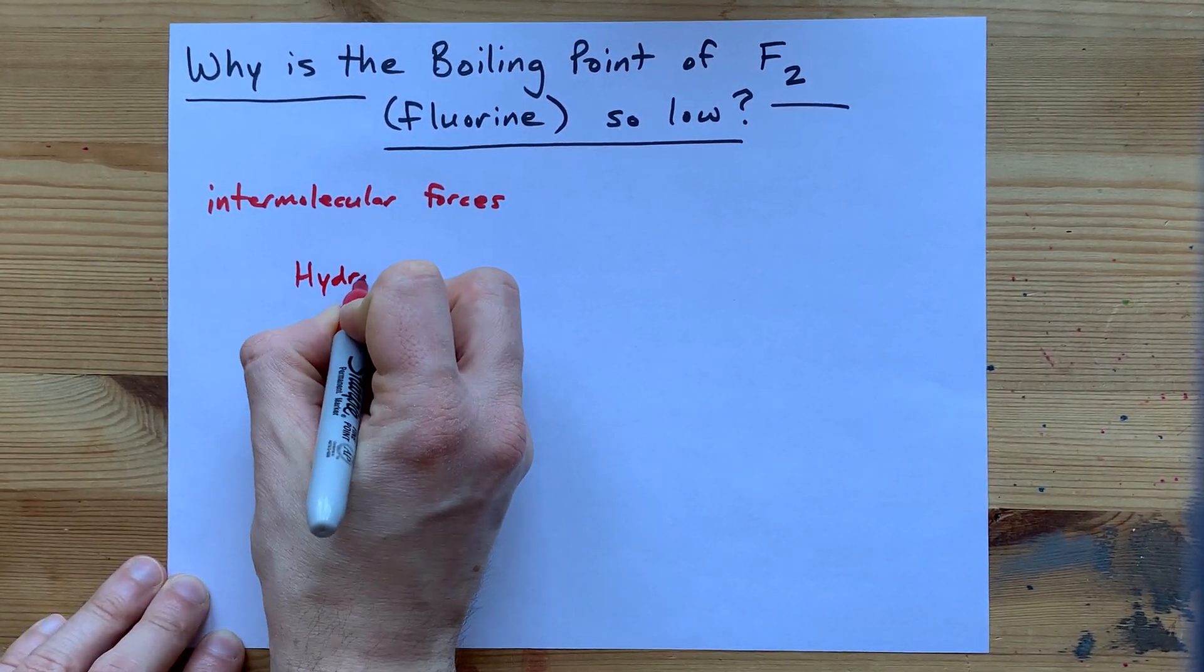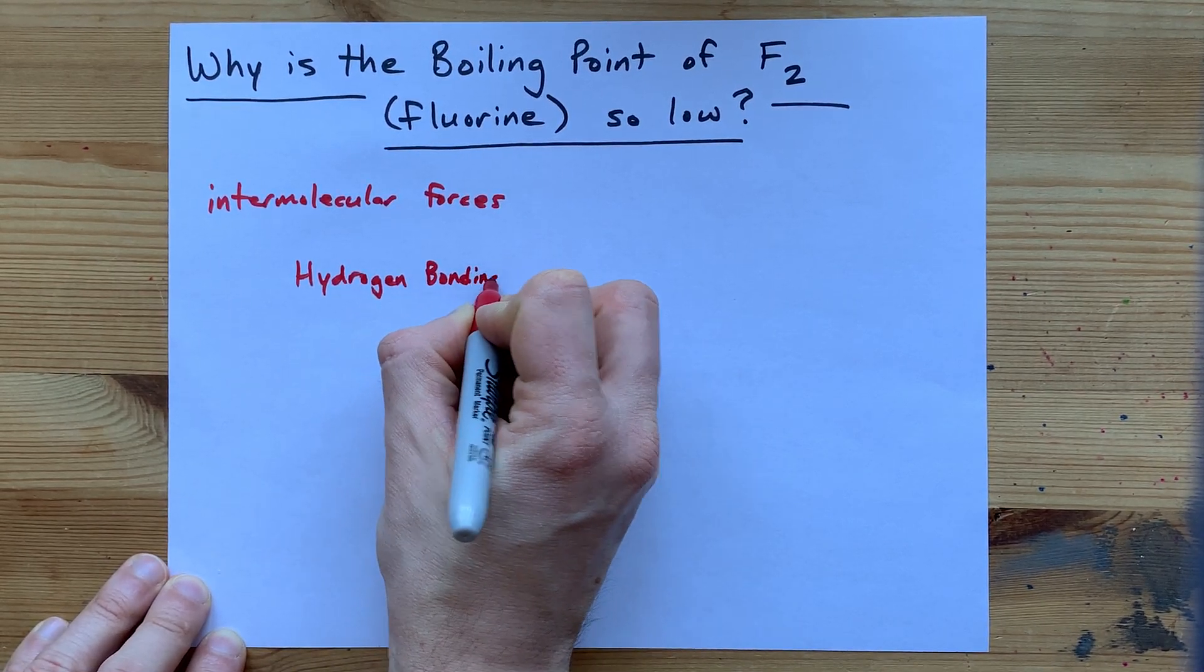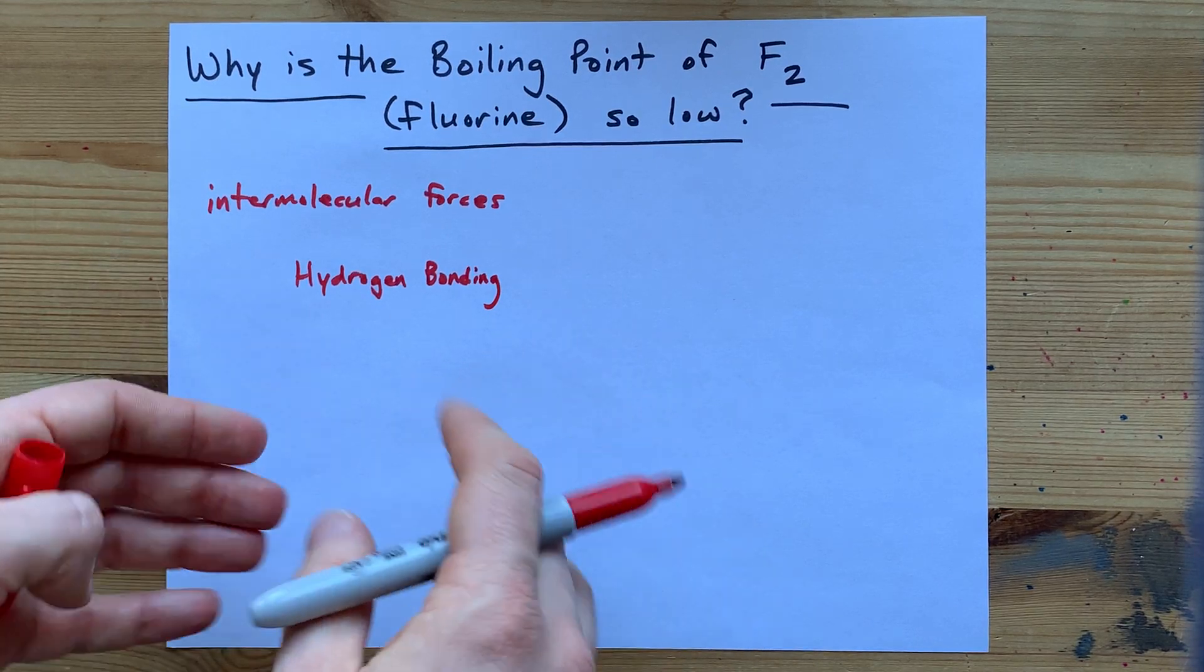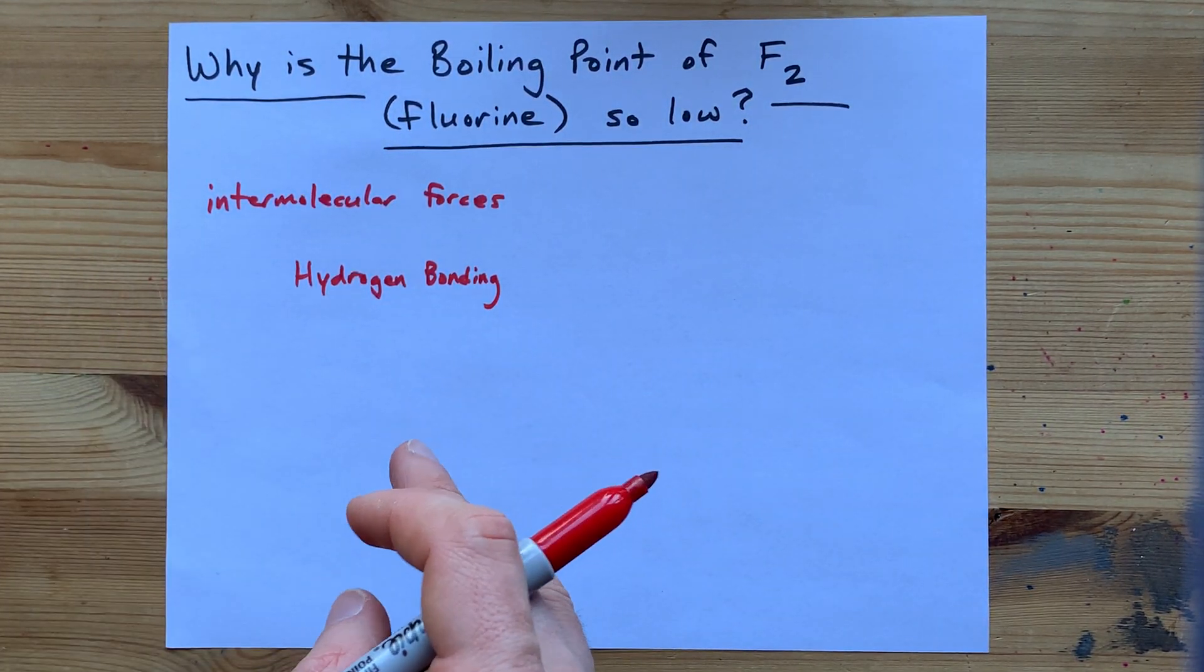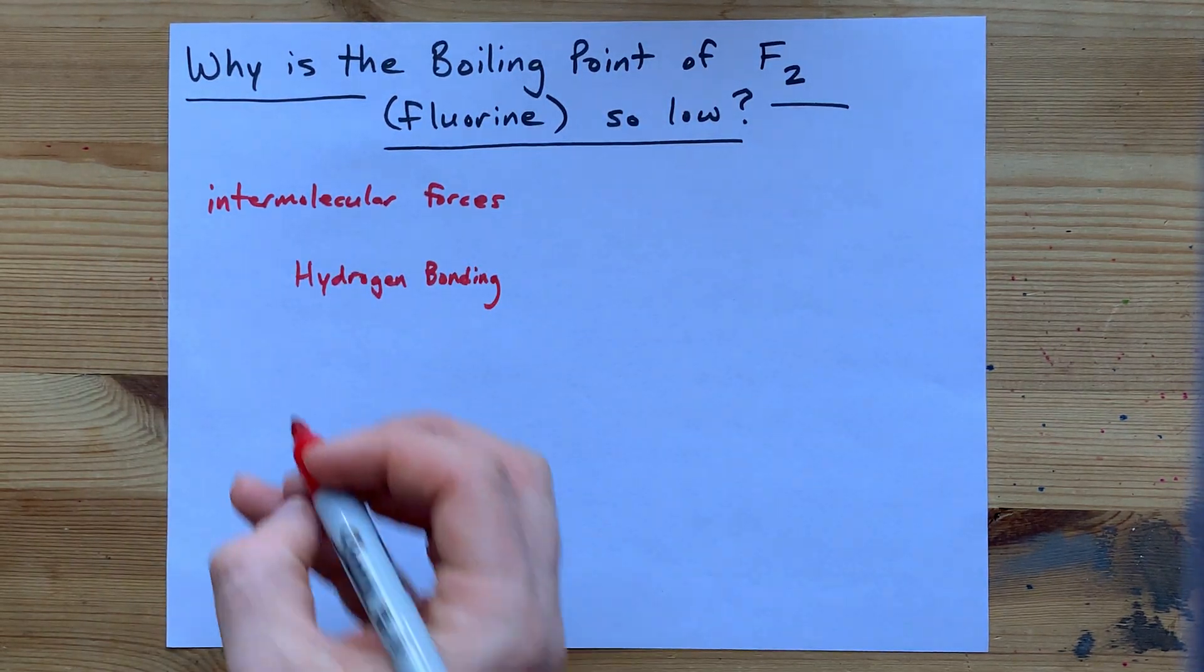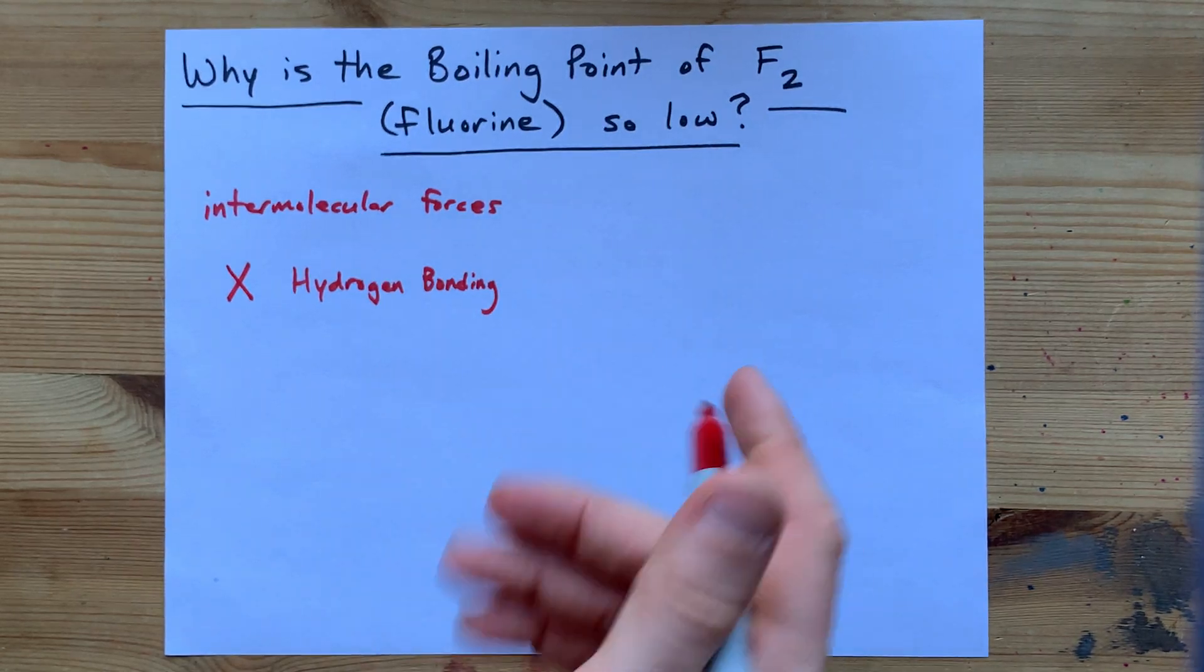And there are three of them that you're going to need to know about. The strongest is called hydrogen bonding. This occurs when you have hydrogen bonded to either nitrogen, oxygen, or fluorine, sometimes chlorine. We don't even have hydrogen here, so fluorine does not have hydrogen bonding between its molecules.